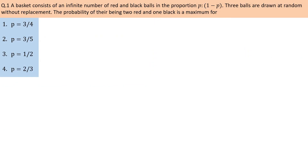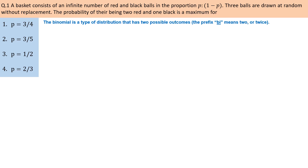A basket consists of an infinite number of red and black balls in the proportion of p and 1-p. Three balls are drawn at random without replacement. The probability of there being 2 red and 1 black is maximum. This question is based on the binomial distribution, which is applicable when an experiment or trial has two possible outcomes, like tossing a coin where the outcomes are either head or tail.